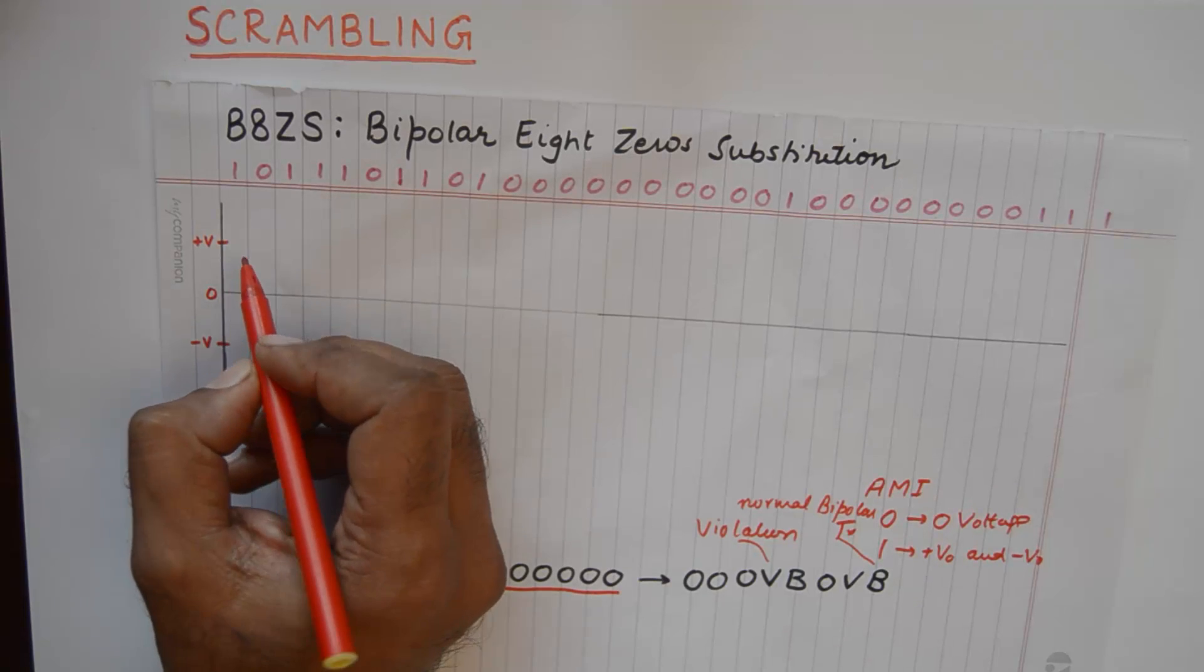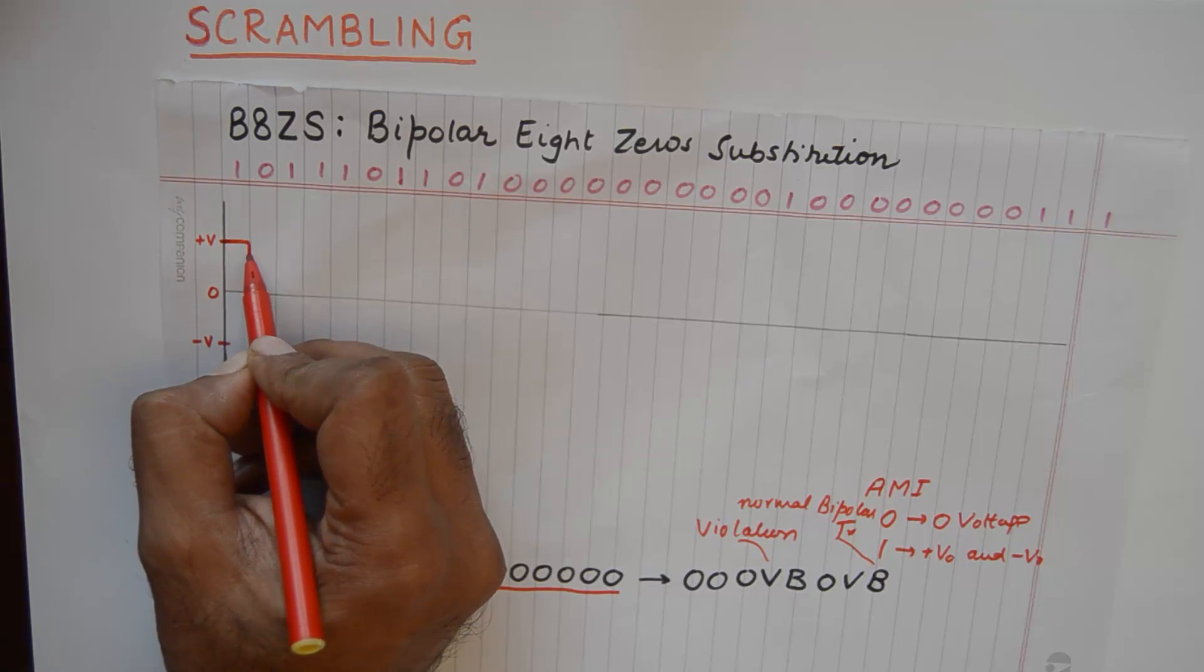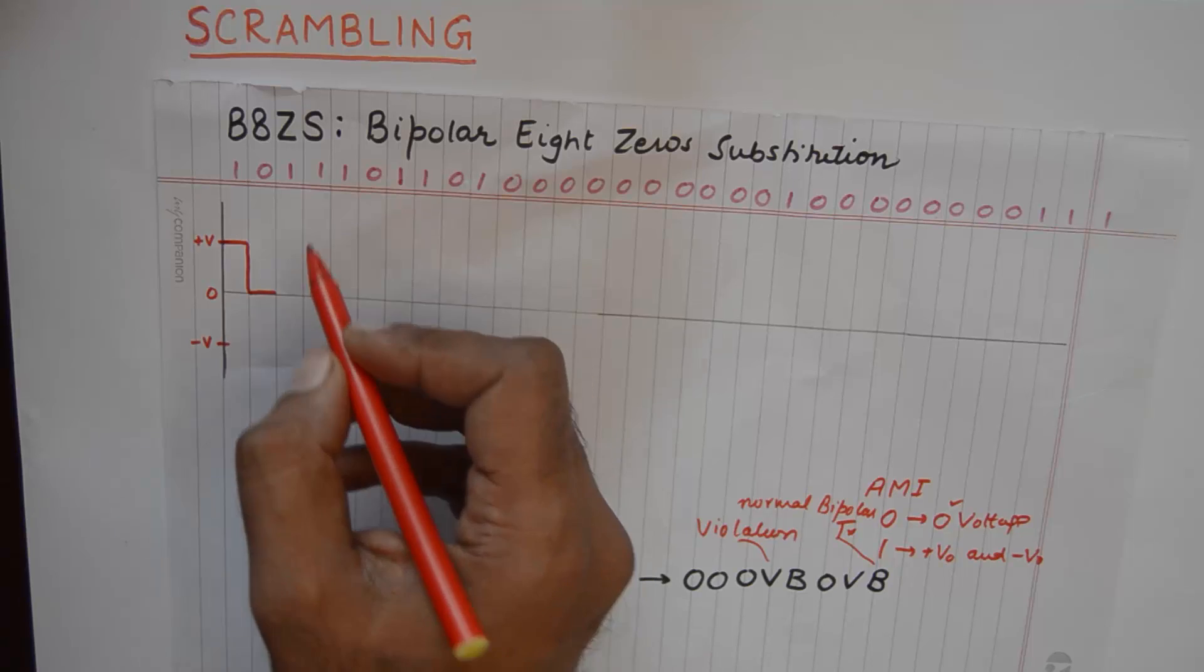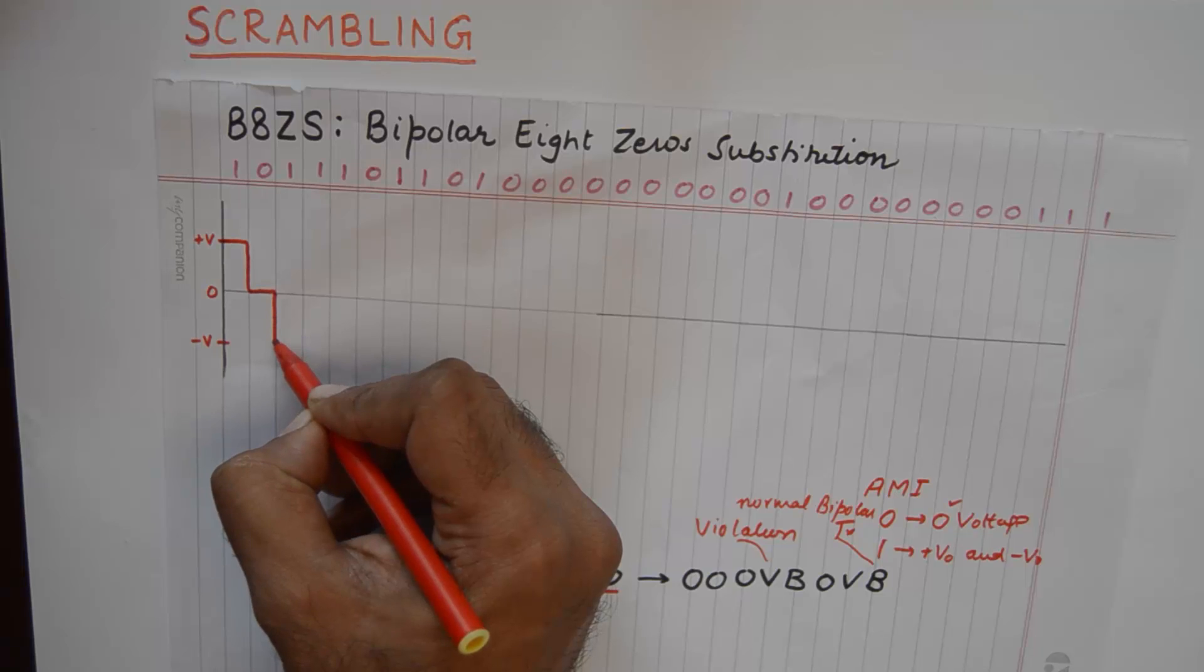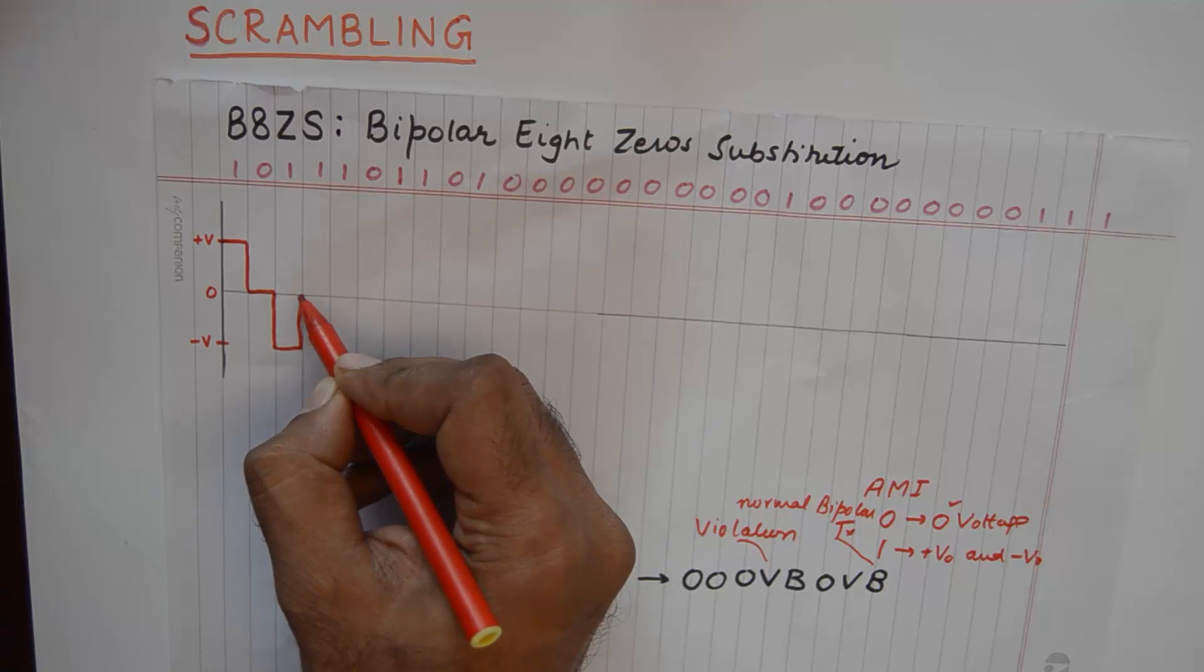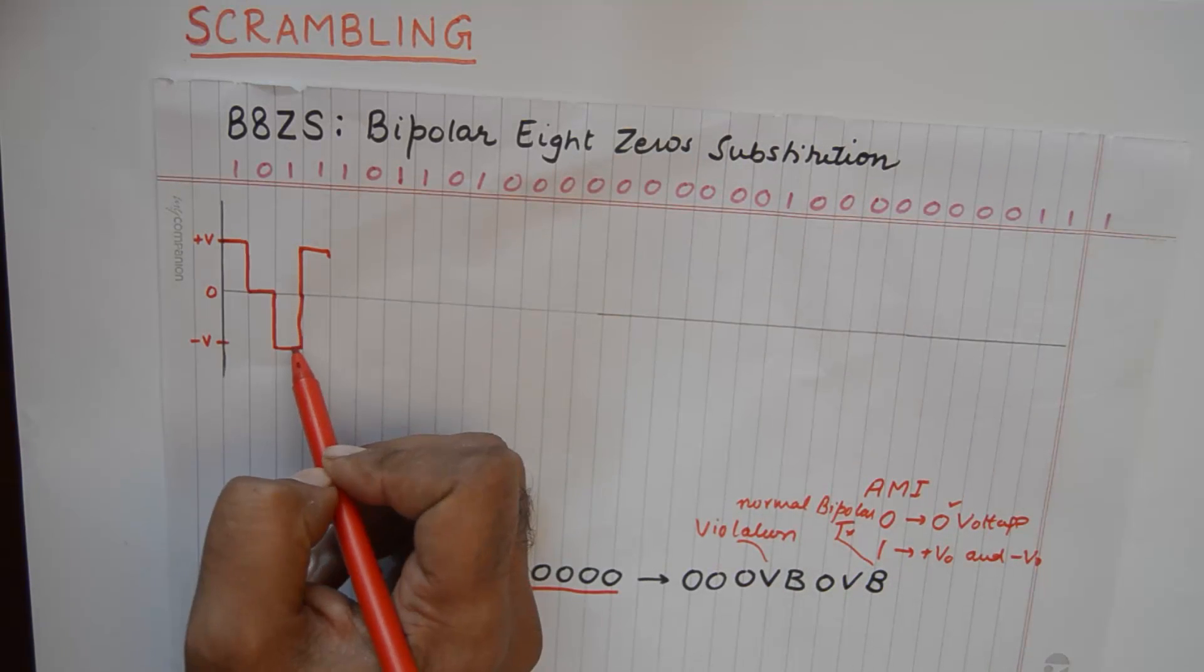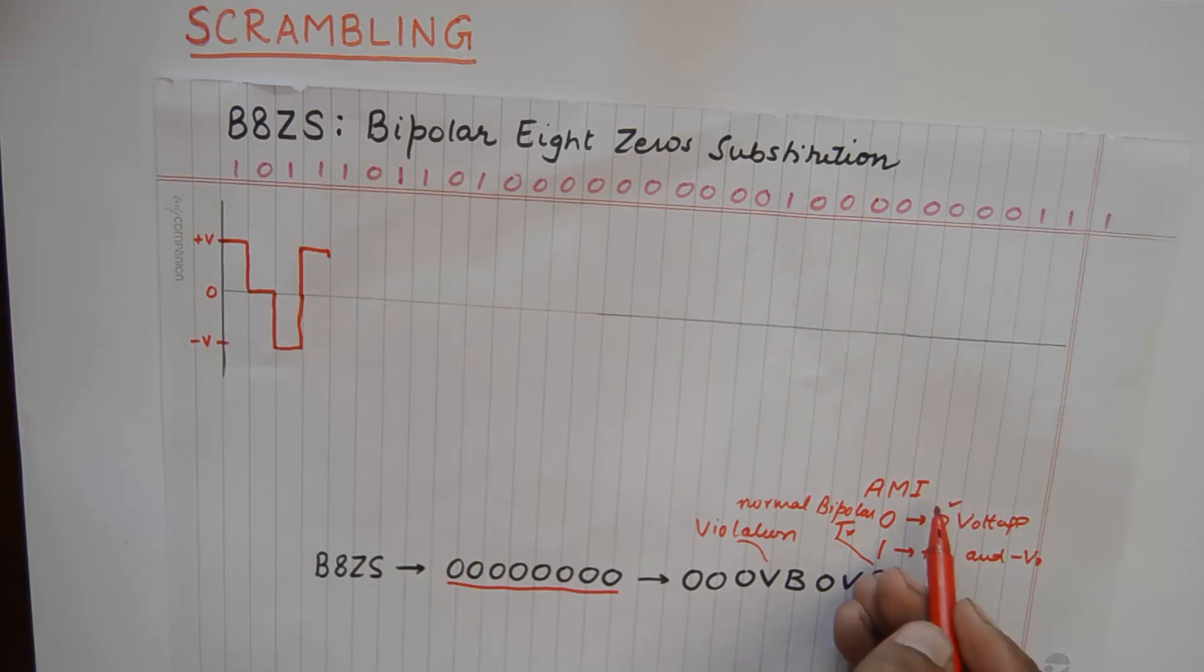For example, if we were to start this code, the first one let us say gets a plus V and a zero is represented using zero. The next one will change its polarity with respect to the previous one. So this one goes into negative territory and gets a minus V. The next one gets a plus V and so on and so forth. A normal bipolar transition is this when the mark is inverted according to the rules of AMI.